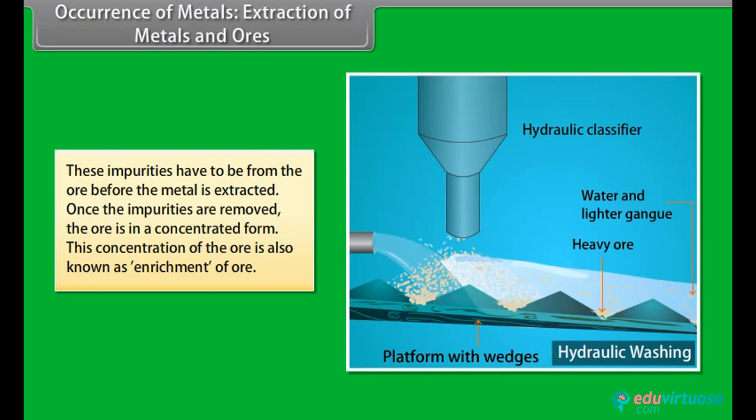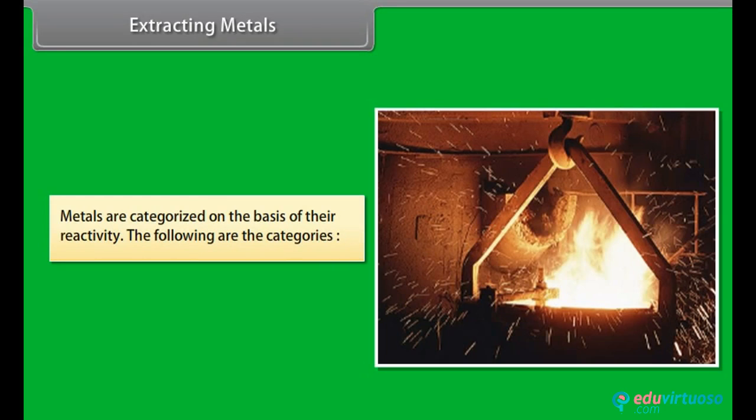These impurities have to be removed from the ore before the metal is extracted. Once the impurities are removed, the ore is in a concentrated form. This concentration of the ore is also known as enrichment of ore. Extracting Metals: After the metals are separate from their ores, they are classified based on their reactivity.